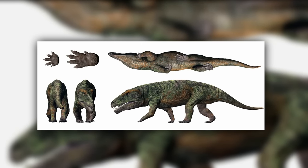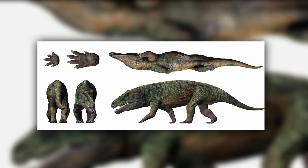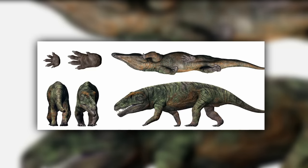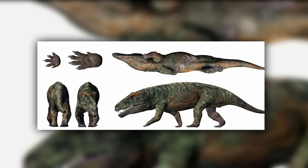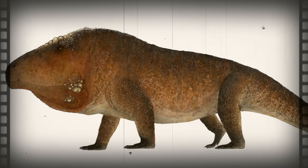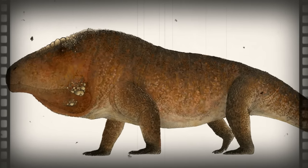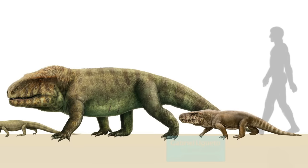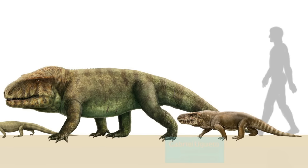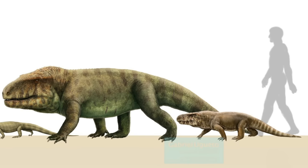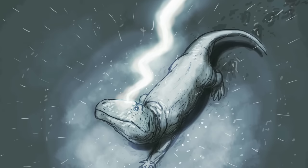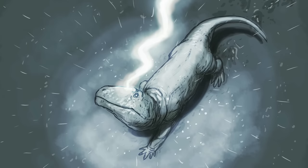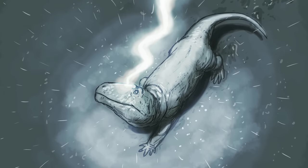Erythrosuchus likely possessed a bite force comparable to that of crocodiles, thanks to its massive neck and robust jaws. This adaptation would have made it exceptionally proficient at consuming most of a carcass, even making typically inedible parts such as bones suitable for consumption. Consequently, this reptile could efficiently devour a substantial portion of its prey in a single feeding.